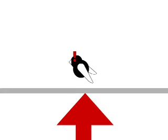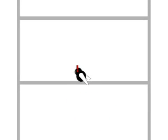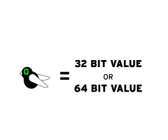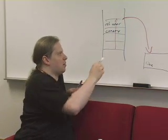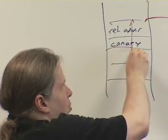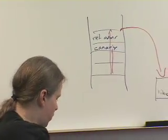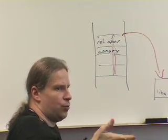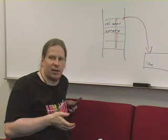The code generated for a function will, every time before using the return address, check the canary value against the expected value. The canary is a large random number — a 32-bit value on 32-bit machines and a 64-bit value on 64-bit machines. Since a buffer overflow must touch the canary in addition to the return address, the probability that an attacker guesses the correct value is 1 in 2^32 or 2^64, which is extremely unlikely.